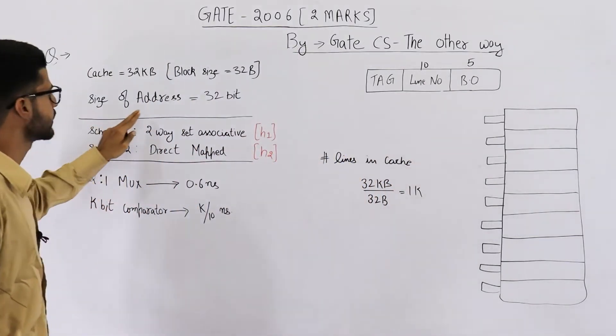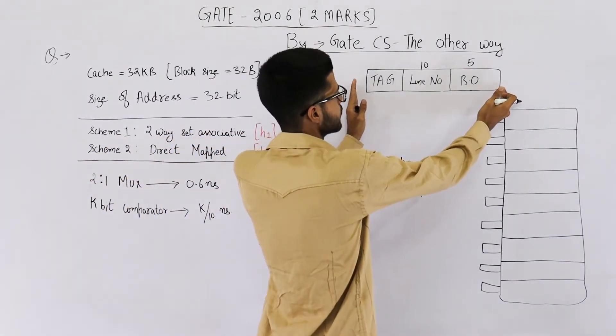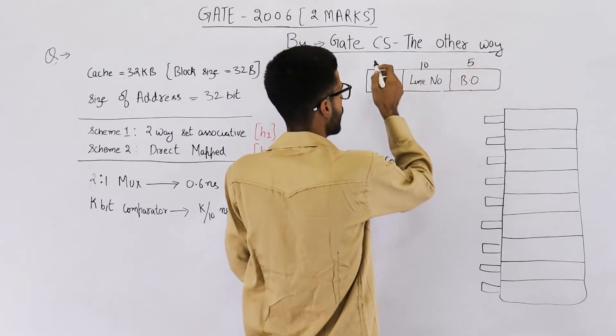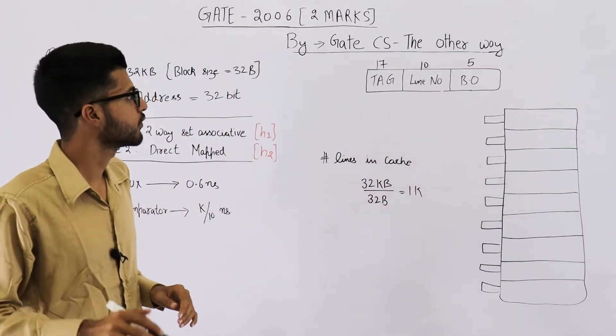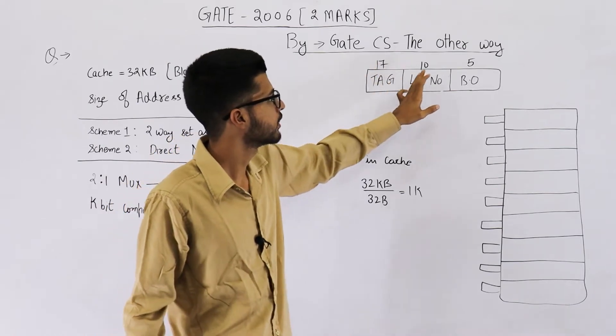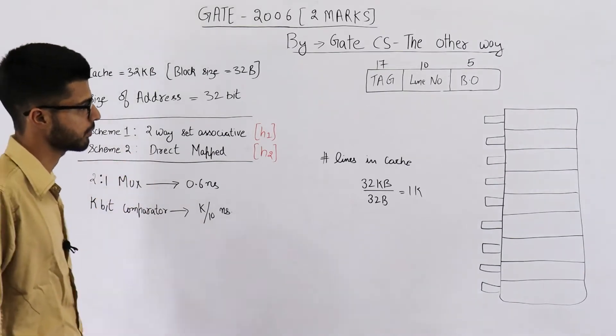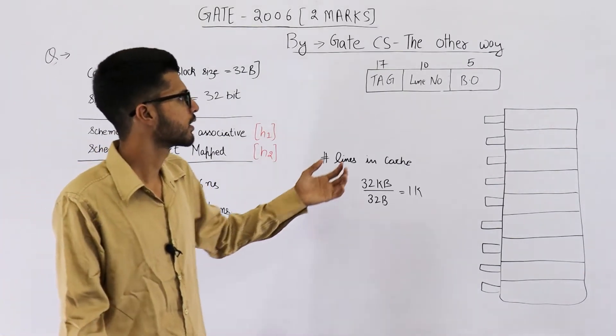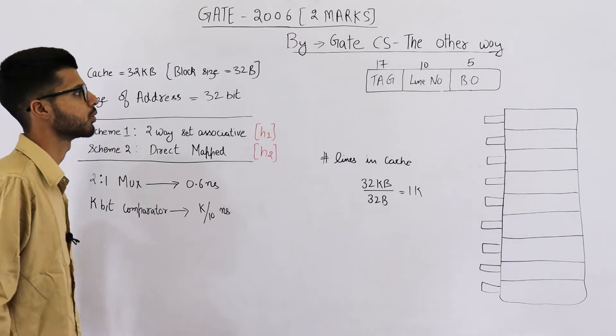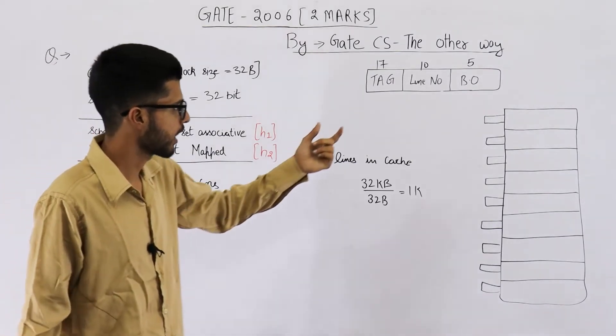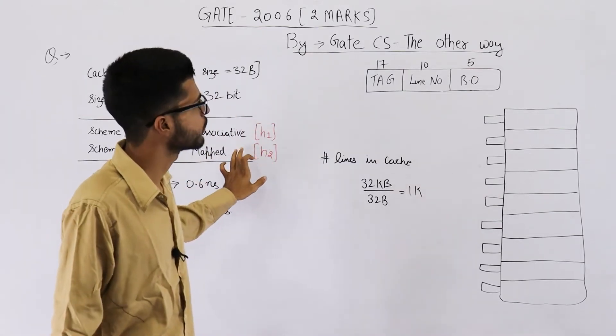Now they're saying size of address is 32 bit. That means the entire physical address is of 32 bits. This much part is 15 bits. So obviously tag will have to be of 17 bits. So the split for physical address is 17, 10, and 5 in case of direct mapped. We are talking about the scheme for direct mapped. And you obviously know that tag, line number, and block offset is the split for physical address in case of direct mapped only. Had it been set associative, this line number would be replaced by a set number. Anyways, first, let's solve the question for h2.